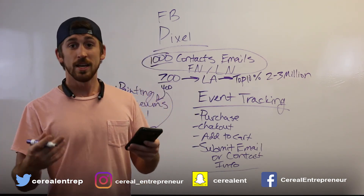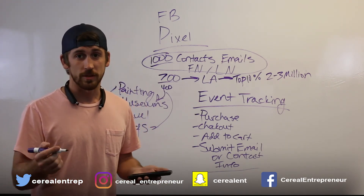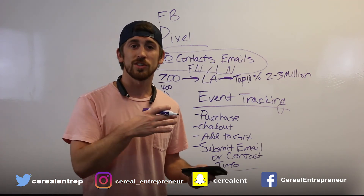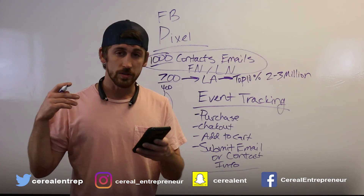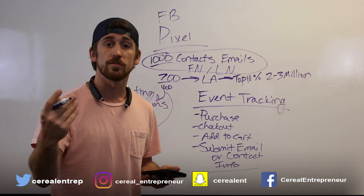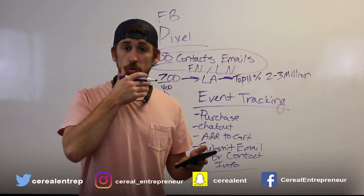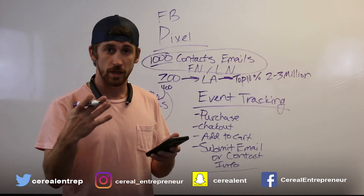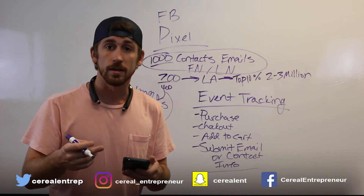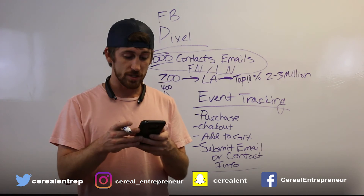Setting up the Facebook Pixel is simple - Facebook provides instructions, and you can even email the code to your web developer. There are tons of videos online about pixel setup. The key event types to track include: view content, search, add to cart, add to wish list, initiate checkout, add payment info, make a purchase, generate a lead, and complete registration. Lead ads are huge right now on Facebook and you want to be taking advantage of all of these.